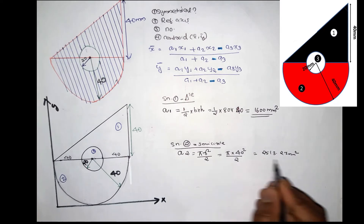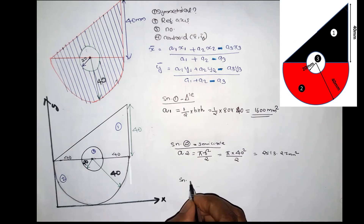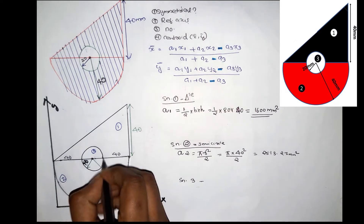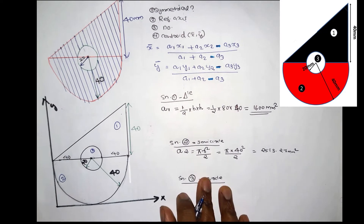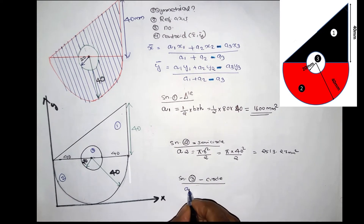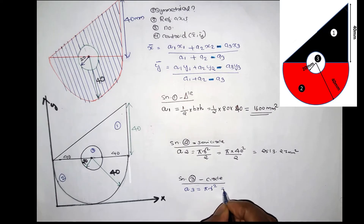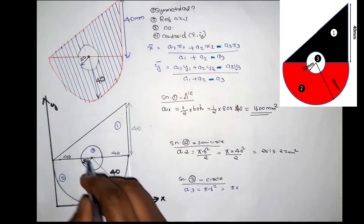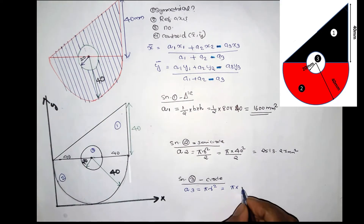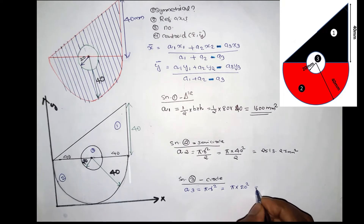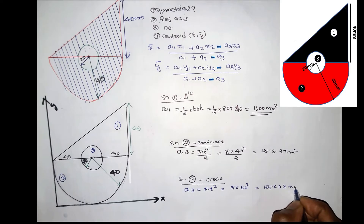Section 2 is complete. Now section 3 is the circle. A3 is equal to π·r². The circle radius is 20. The area is 1256.03 mm².